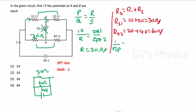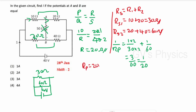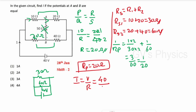For the parallel combination: 1/Rp = 1/30 + 1/60 = 2/60 + 1/60 = 3/60 = 1/20, so Rp = 20 ohm. Using I = V/R = 40/20 = 2 ampere. The current is 2 ampere. Option 2 is the right answer.